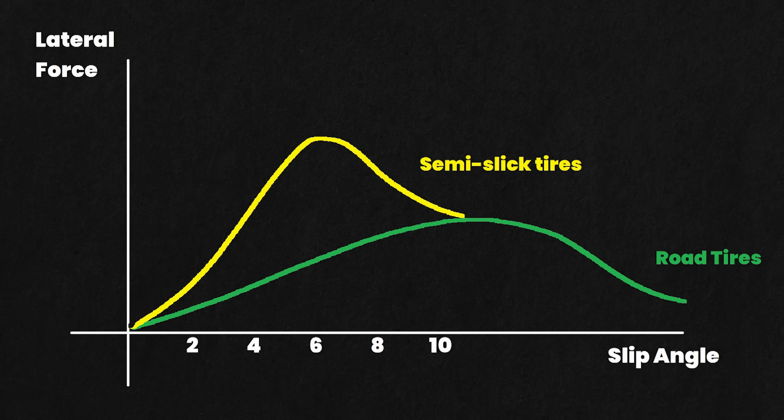Slick tires, meant for professional racing, have their optimal slip angle at around 2 to 4 degrees. They have the stiffest construction but the softest compounds. Grip builds up very quickly, reaching its peak very quickly, and the grip drops very quickly past the optimal slip angle, which requires the most precise driving technique.